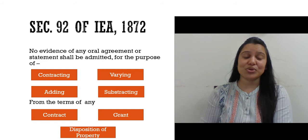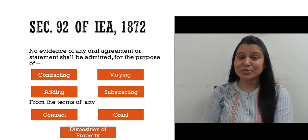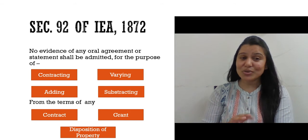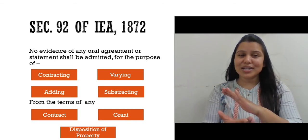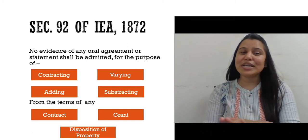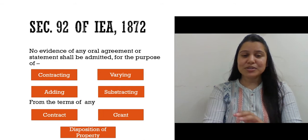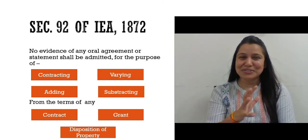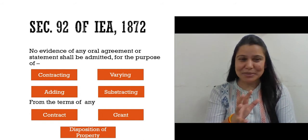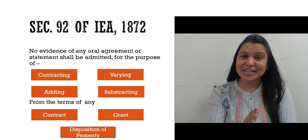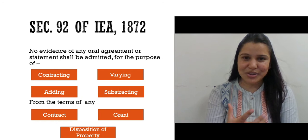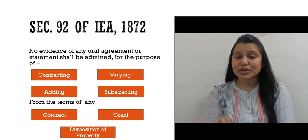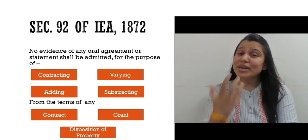Section 92 states that no evidence of any oral agreement or statement shall be admitted for the purpose of contradicting, varying, adding, or subtracting from a written document. Note: please read the first one as 'contradicting' — it is a typo error, not 'contracting.' So, to contradict, vary, add, or subtract any clause — when the document is reduced into writing, no oral evidence can be given.